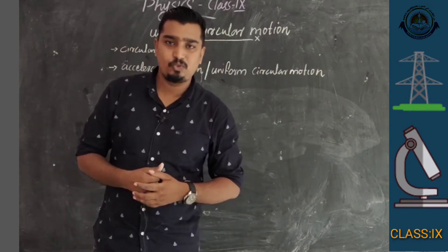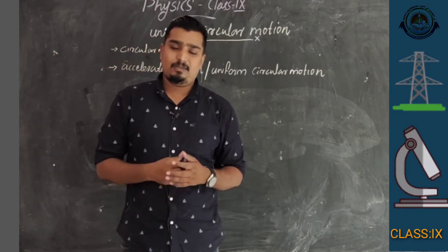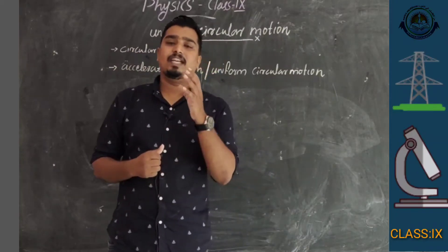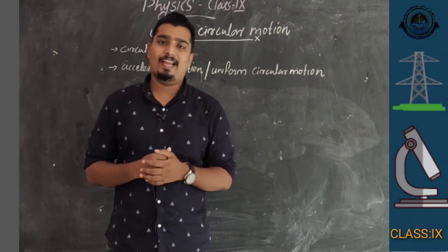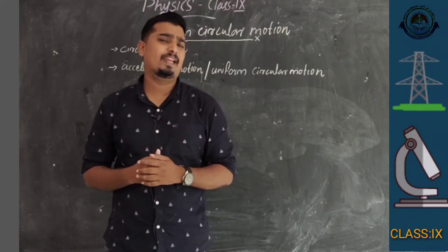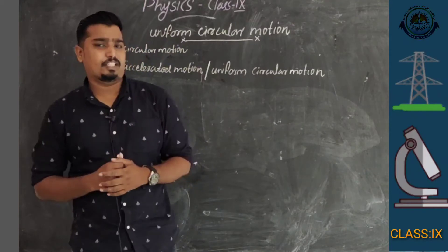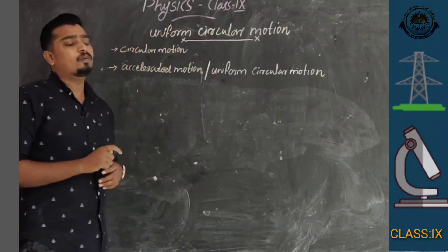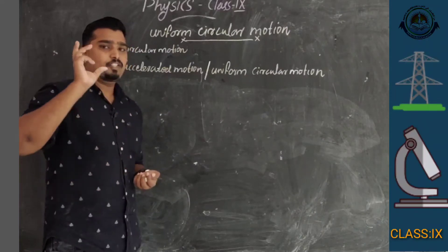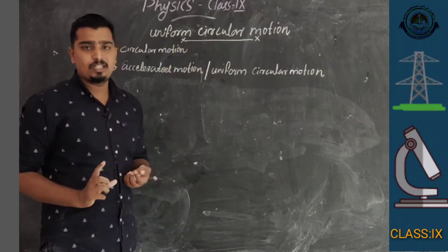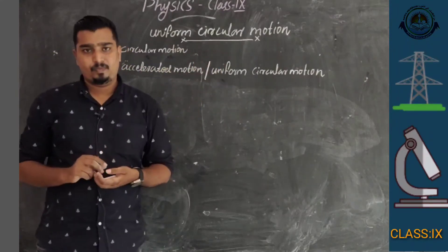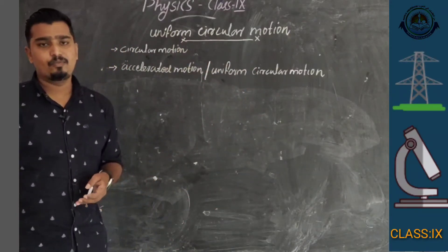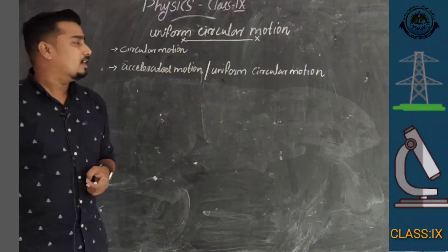Good morning, dear students. Welcome to physics class. We started our first chapter, Motion. In this chapter we discussed straight line motion — equations of motion and how to draw a graph — in the first session. In the second session we are going to discuss uniform circular motion. So in this chapter there are two types of motion: straight line motion and uniform circular motion.